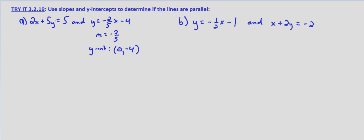To put the other equation into slope-intercept form, we solve for y. Subtract 2x from both sides. We have 5y equals negative 2x plus 5.